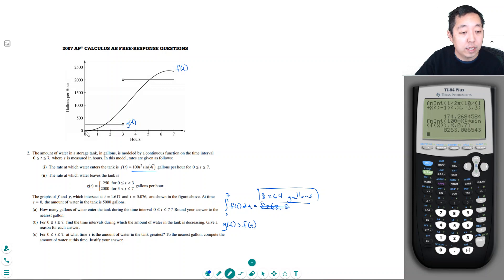So when is g of t greater than? Between 0 and this time, which they tell you is 1.1617. And also, then it increases, so f is bigger until this point. So from 3 to this point here, which is 5.067. So that's when it's decreasing.